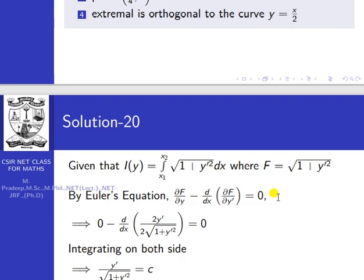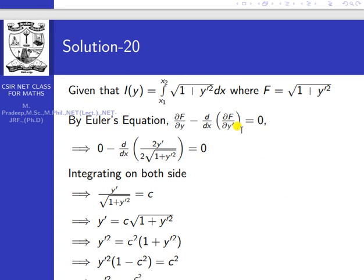First, let us discuss how to find the extremal. The extremal for this problem has f = √(1 + y'²). The Euler equation is ∂f/∂y − d/dx(∂f/∂y') = 0. Here ∂f/∂y = 0, and differentiating with respect to y', we get d/dx of [y' / √(1 + y'²)] = 0.